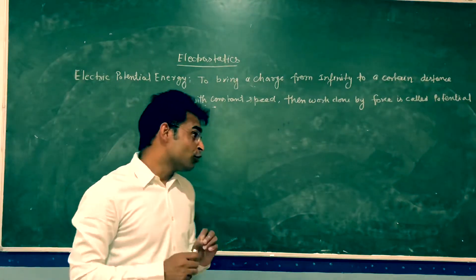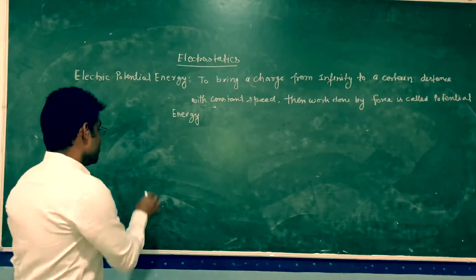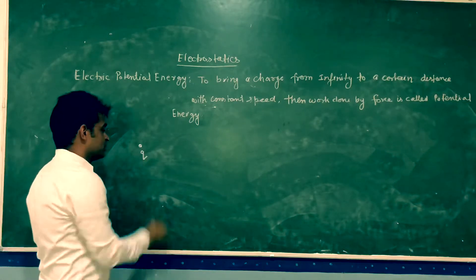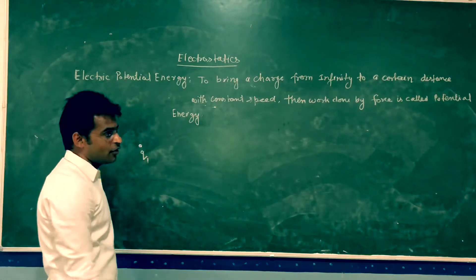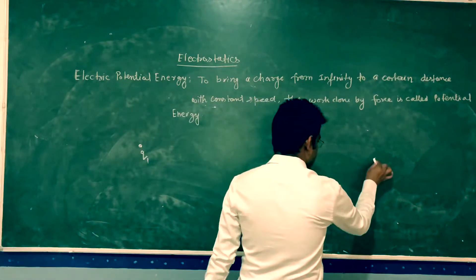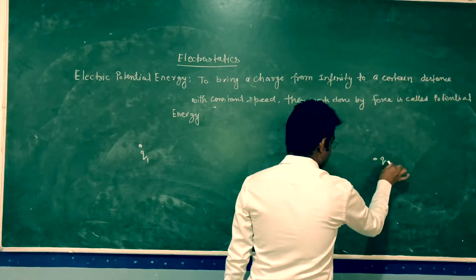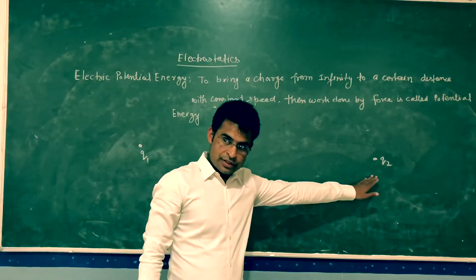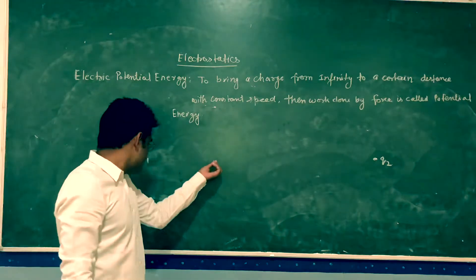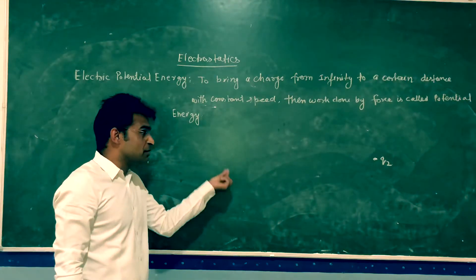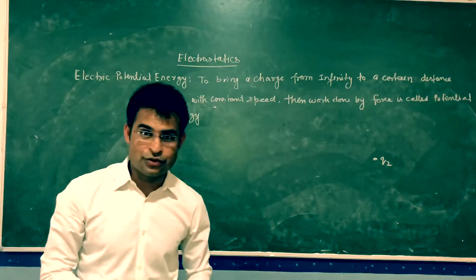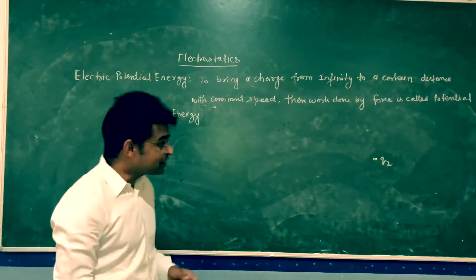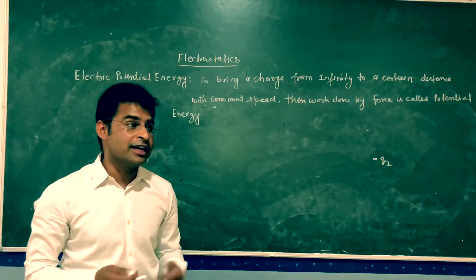Let's say there is charge q1, and at a long distance from it there is another charge q2. According to the definition, we have to bring charge q2 towards q1 to a certain distance. There will be some work done due to the electrostatic force, and whatever work done is stored as potential energy.